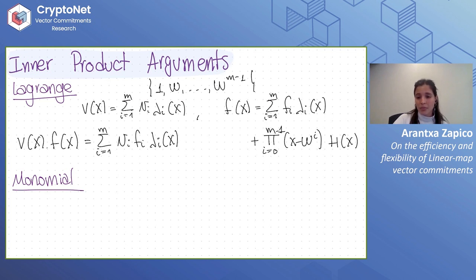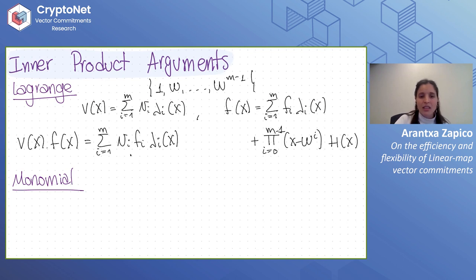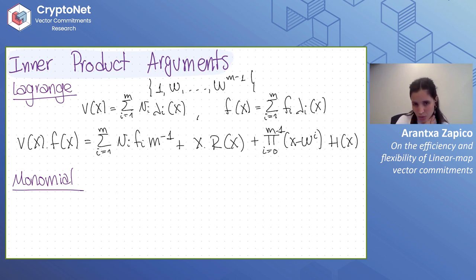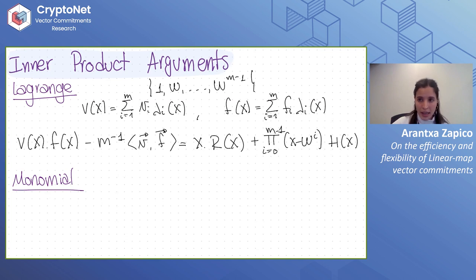The vanishing polynomial is the product of all terms x minus the elements of the set. What remains is almost the inner product — we just need to get rid of the Lagrange factors. Because we work with roots of unity, Lagrange polynomials evaluated at 0 are a constant equal to the inverse of the set size. So dividing allows us to isolate the value at 0, and with some simplification we get an argument for proving a claimed inner product value between v and f from commitments to them.